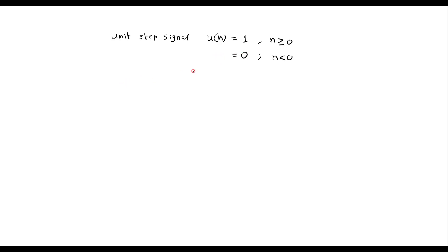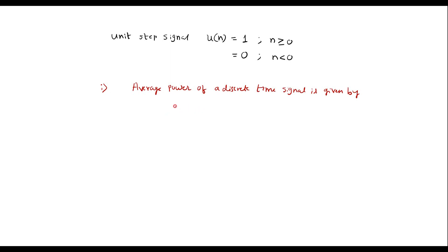Let me calculate the power of the unit step sequence. The average power of a discrete time signal is given by: P is equal to limit as n tends to infinity of 1 divided by 2n plus 1, summation from n equals minus n to plus n of x of n magnitude squared. This is the formula used to find power of any discrete time signal.